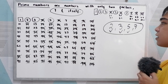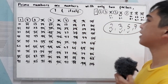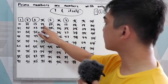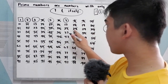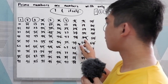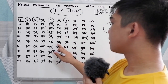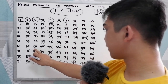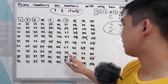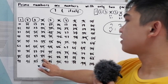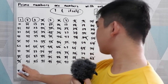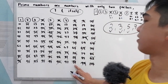We're done with number 5. At last, encircle 7, then cross out the multiples of 7. Multiples of 7 are: 14, 21, 28, 35, 42, 49, 56, 63, 70, 77, 84, 91, and 98. Okay, it's already crossed out.